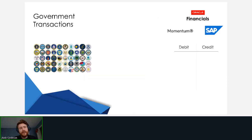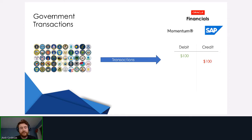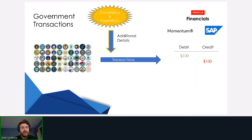The real benefit here: these agencies make transactions that meet up with standardized financial accounting systems. Many of you may be familiar with Oracle Financials, Momentum, and SAP. These come in the form of debits and credits — Accounting 101 — but due to government compliance and regulations, a certain number of data fields need to be contained per transaction.